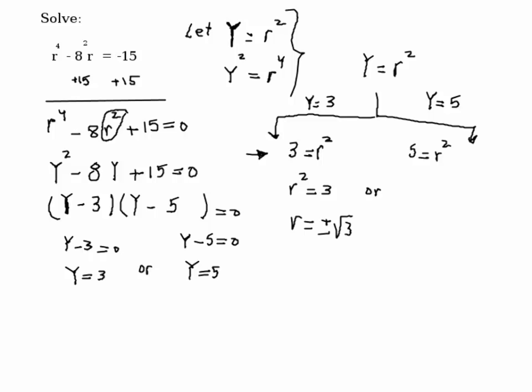Same thing here. If r² = 5, then r = ±√5. So we get four solutions: √3, -√3, √5, and -√5. These are our solutions using the substitution method.